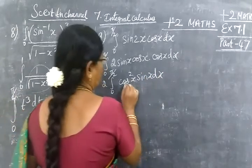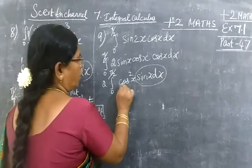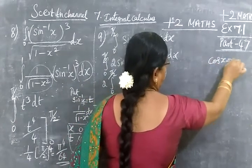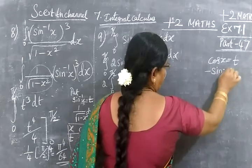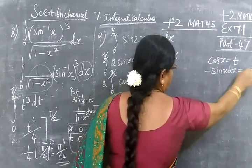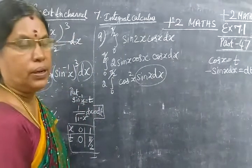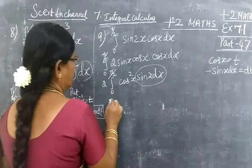Now we'll use substitution. Let cos(x) equal to t. The differentiation is minus sin(x) dx equal to dt. Cos(x) differentiation is minus sin(x).